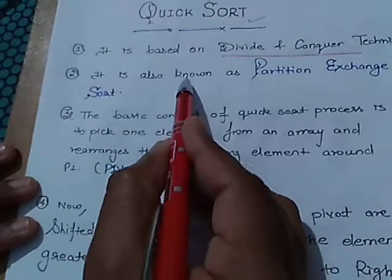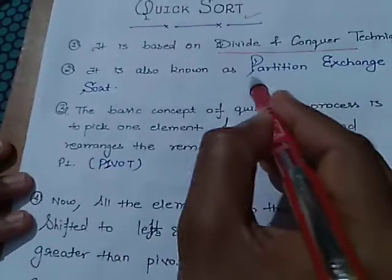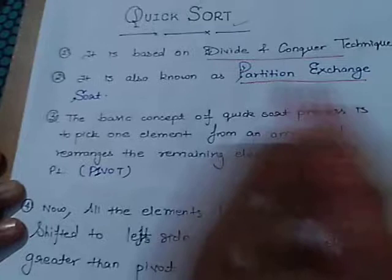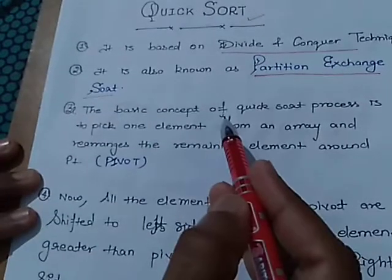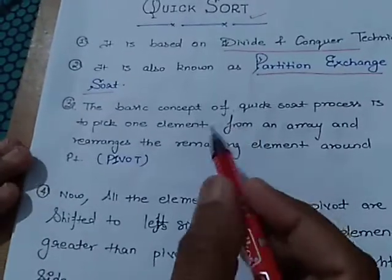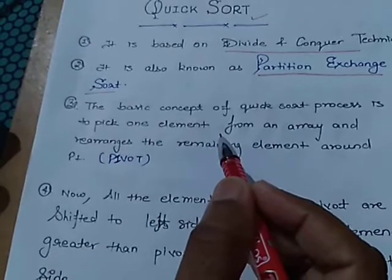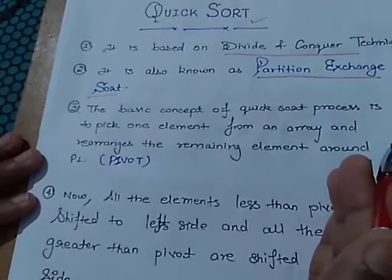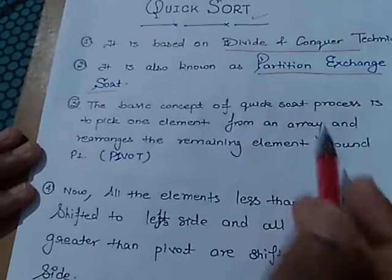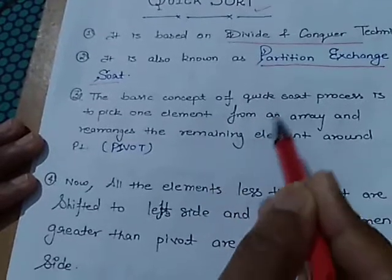Second point is it is also known as partition exchange sort. It means the array is divided into two partitions, left portion and right portion, that is organized around the root element.